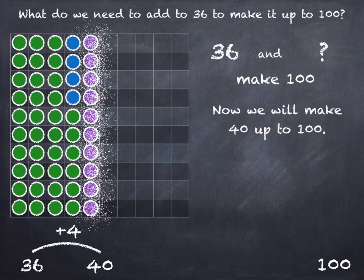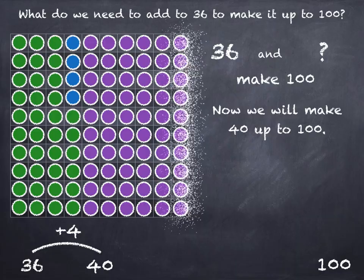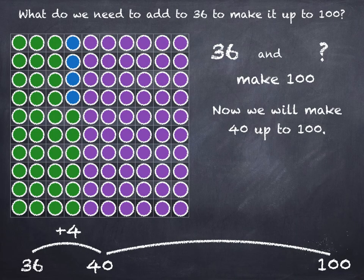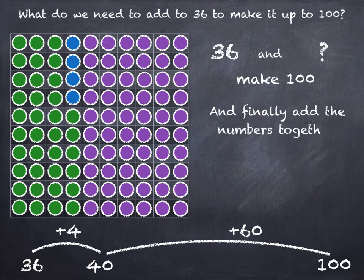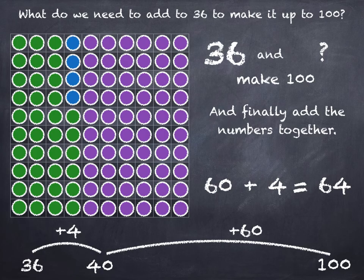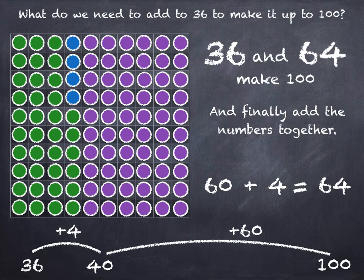How many tens do we need to add on? That's 6 tens, which is 60. 40 plus 60 is 100. And then finally we'll see what we had to add on all together — we added on 60 and 4, so that's 64. So 36 and 64 make 100.